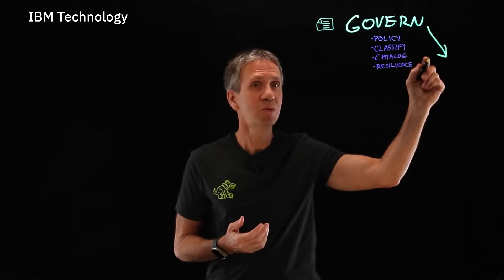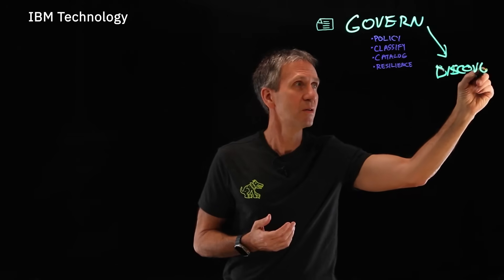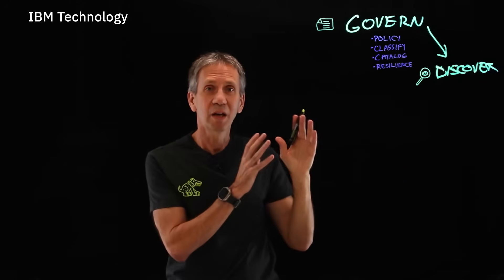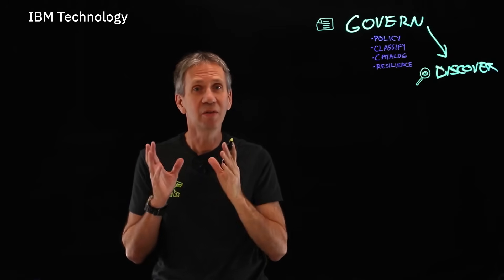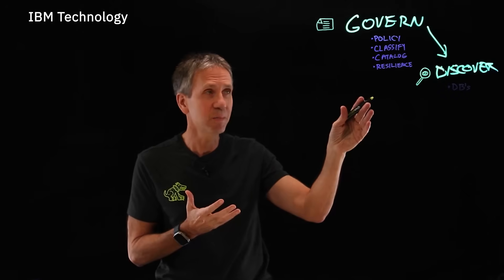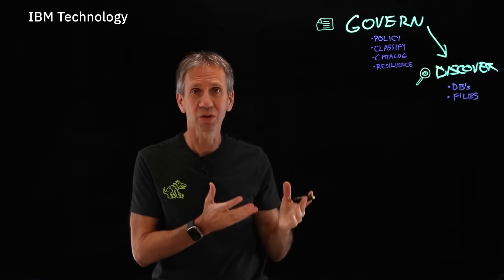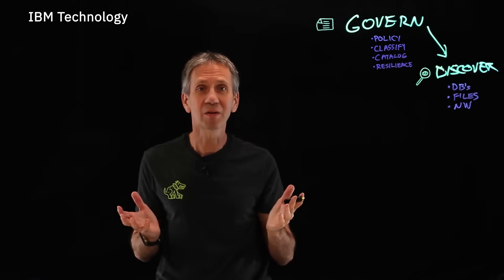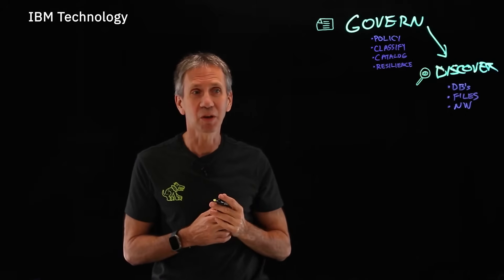From governance, I'm going to move over to discovery. I need to be able to see where all of that information is. The catalog is the preconceived notion of where it all is, but then there's reality — I have to go out and discover where all this stuff is. I need to look in my databases and my files — structured sources and unstructured sources of data. Also, I want to look across my network, because sometimes information is flying around and I'm not aware that sensitive stuff may be leaving my network.